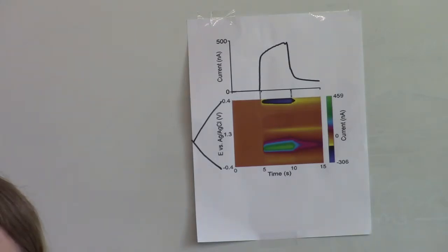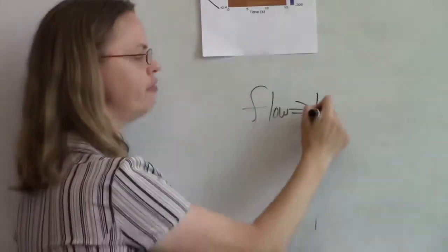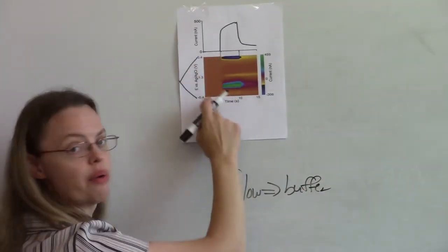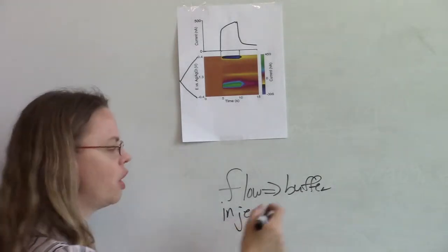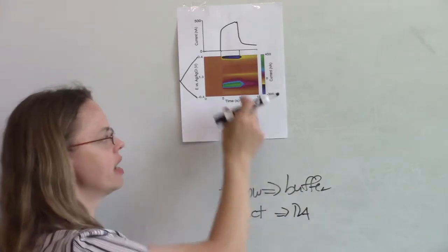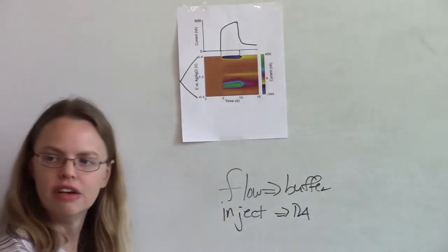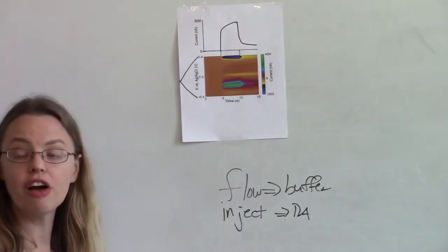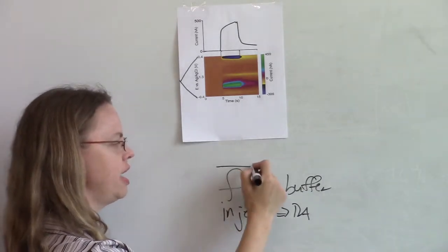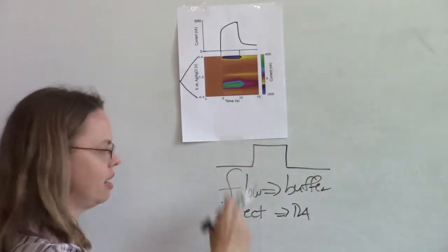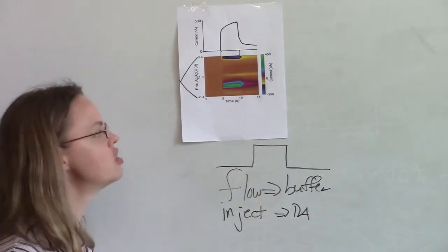This is just a flow cell experiment. We do a lot of flow cell experiments in FSCV to test our electrode. So what we do is we first flow by just buffer, and then we do what we call an injection, but we really just flip a switch and now we flow by dopamine for a few seconds. And then we flip the switch back and then this part again is buffer. So it's like buffer, dopamine, buffer. And if our flow cell is good, the response we should get should be kind of like a square.